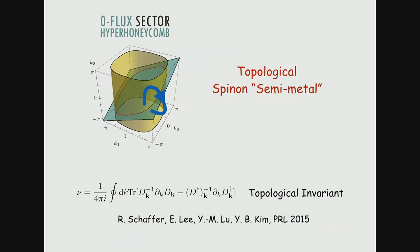The 3D Kitaev spin liquid is characterized by a topological invariant: the integral of a Berry-phase-like combination along a loop around the zero-energy nodal line in momentum space gives an integer. The system can be thought of as a spin-on semi-metal — a spin liquid version of a topological semi-metal. Additionally, one can deform the contour inside the ring to find non-trivial 1D winding, which predicts interesting flat-band boundary states on certain surfaces, analogous to topological insulators.